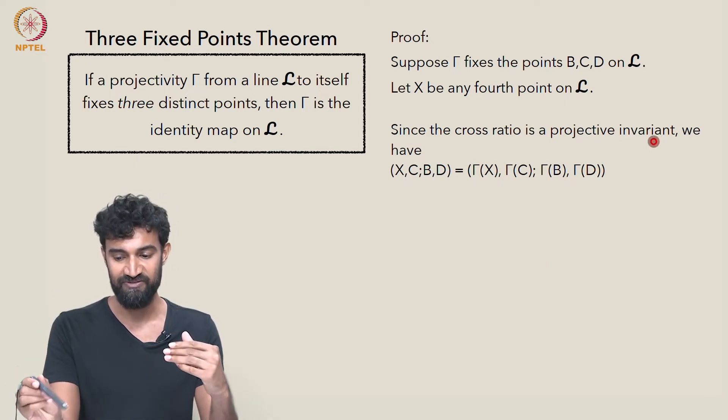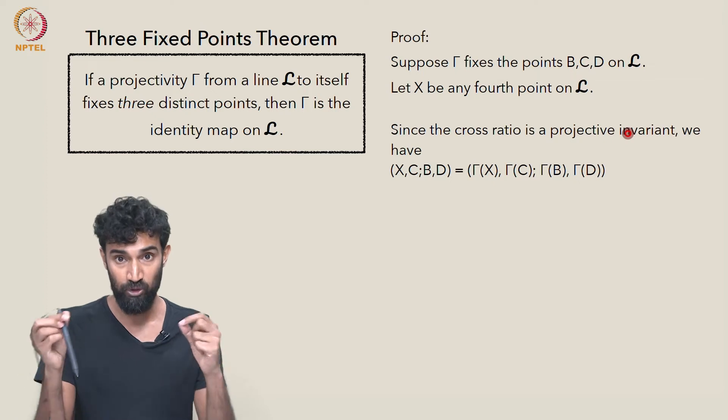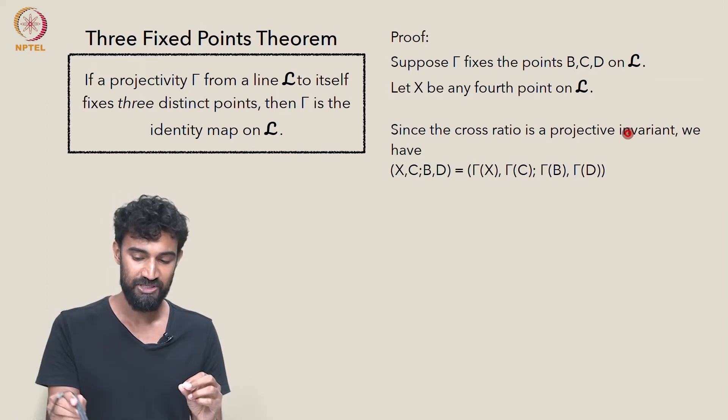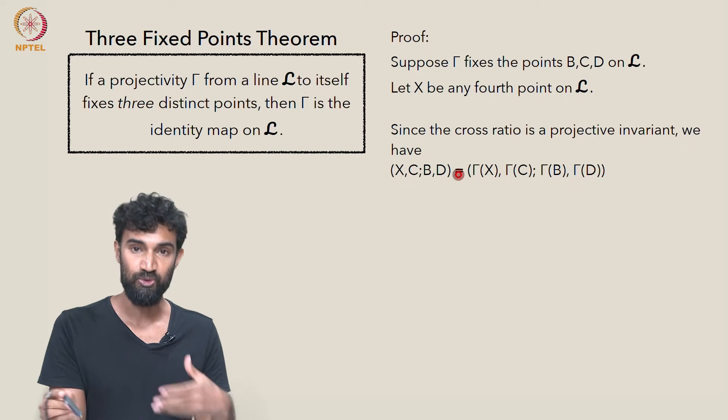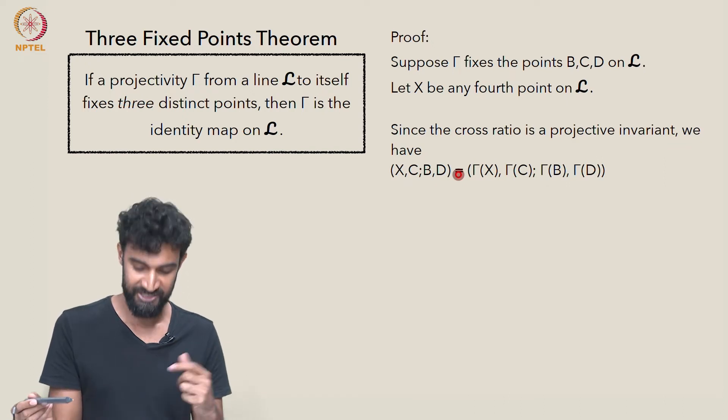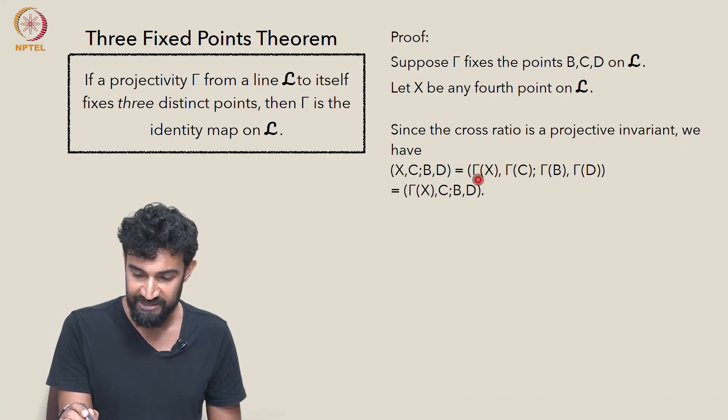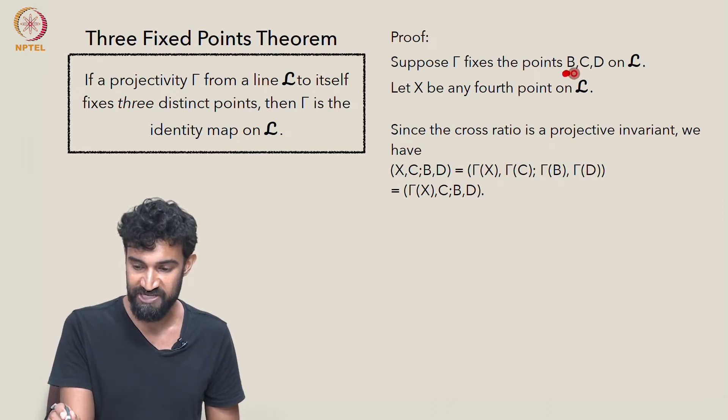You can take the projective image under gamma of those four points and then calculate the cross-ratio of those. It'll be the same as the cross-ratio you would have gotten for the original four points. And this is in fact, well, we know that B, C, and D are fixed points of gamma. So this is just the cross-ratio of gamma of X with C, B, and D.